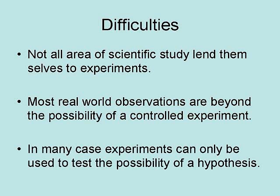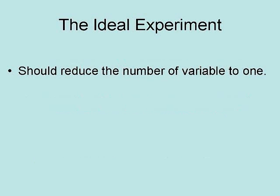In many cases, experiments can only be used to test the possibility of a hypothesis. This is sometimes done in historical science, trying to replicate a past event to show that it could have happened. The ideal experiment should reduce the number of variables to one.